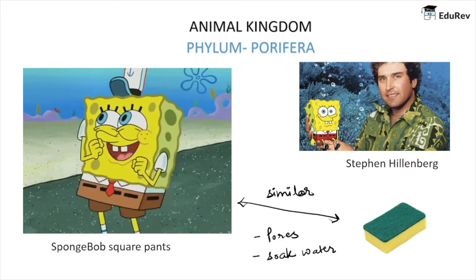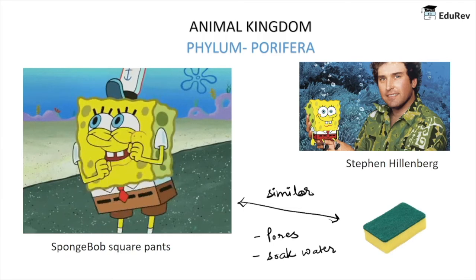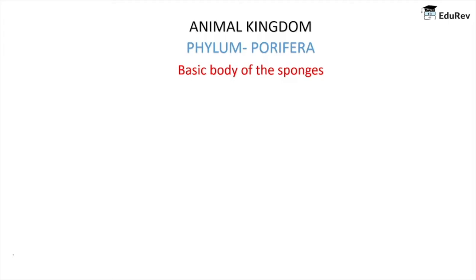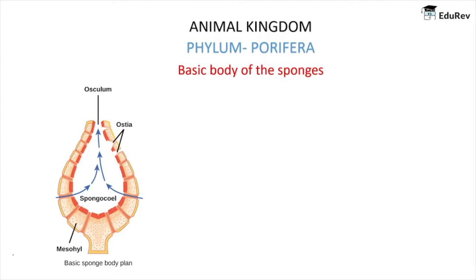We are going to study these organisms — those who bear pores. We'll cover their body, their habitat, and the kind of reproduction they show. That is Porifera, and the example of Phylum Porifera are the sponges. Before moving to the details, let me first introduce you to the basic body plan. Sponges live inside the water, so these are marine animals. From the image, we know that sponges are vase-shaped organisms.